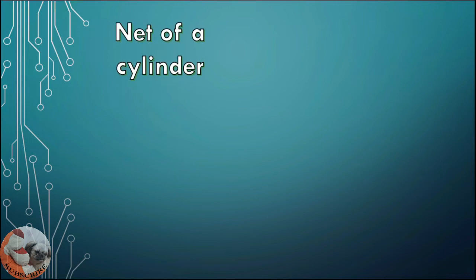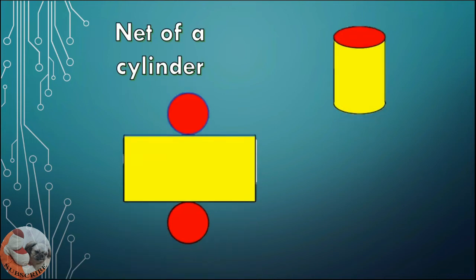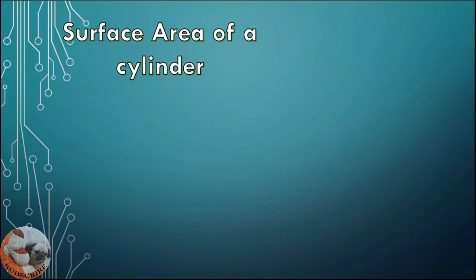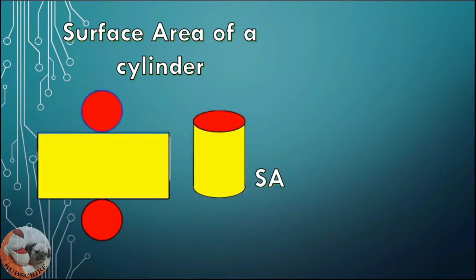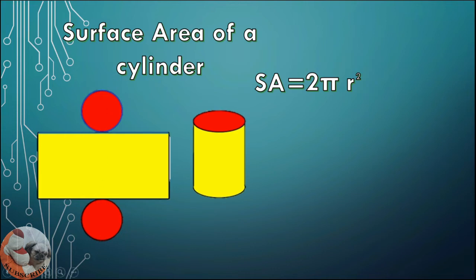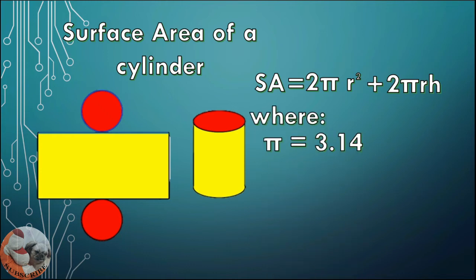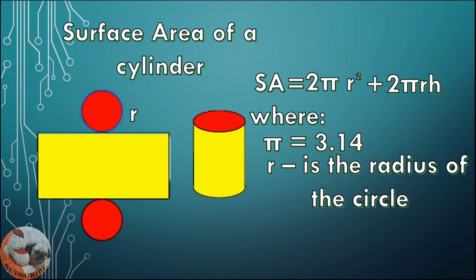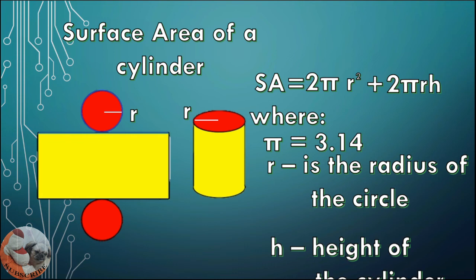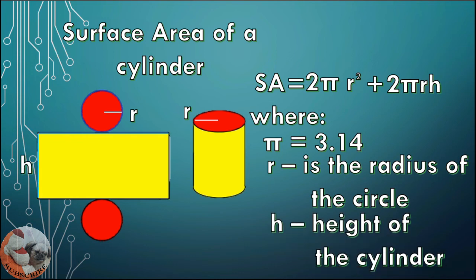Then we have the net of a cylinder. It has 2 circles and a rectangle. To find the surface area of a cylinder: surface area equals 2πR², which is the formula for the two circles, plus 2πRH, which is the formula for the rectangular figure. Where pi equals 3.14, R is the radius of the circle, and H is the height of the cylinder.